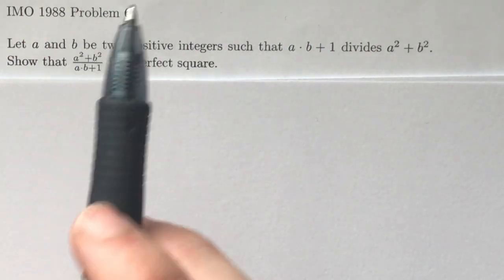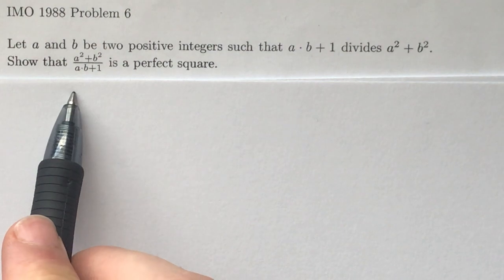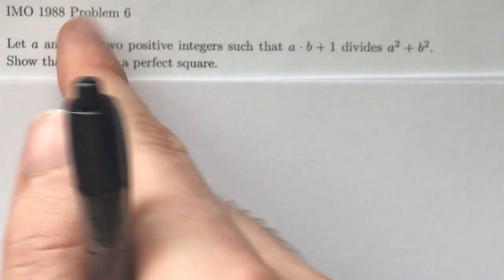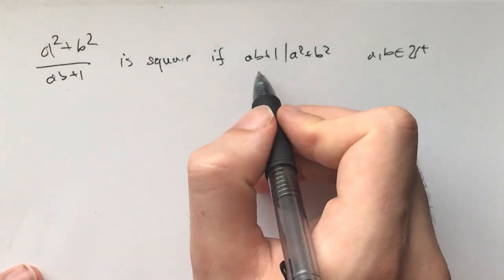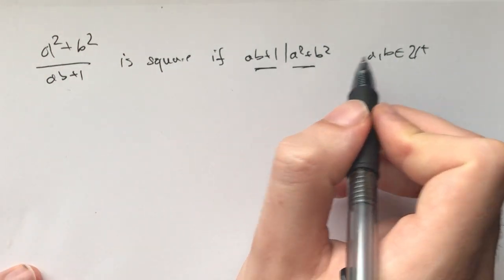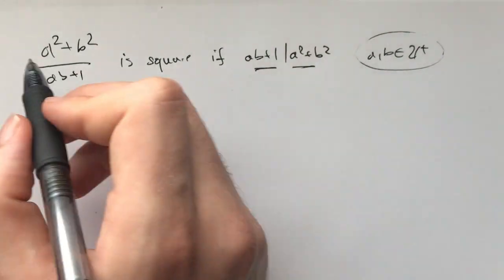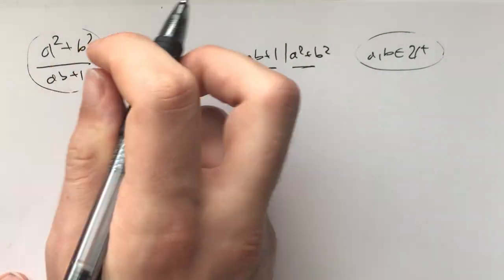When you're confused and you don't know what to do, what should you do? We'll see soon. So now, let's begin. What the problem asks us is to prove that if ab+1 divides a²+b², where a and b are positive integers, then that this is a perfect square.